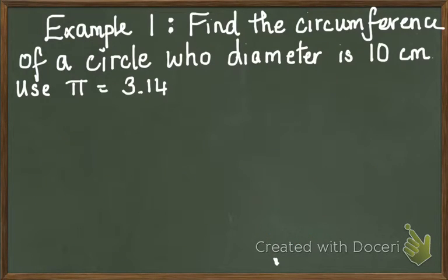Now, let's work on an example problem. Find the circumference of a circle whose diameter is 10 centimeters. Use pi is equal to 3.14. Now, take my lead and follow the steps.